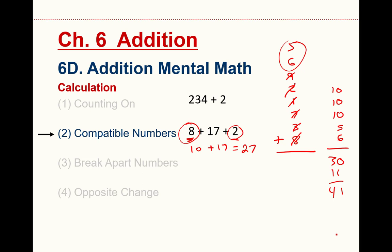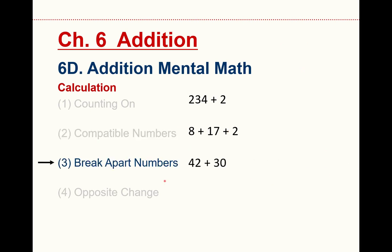Moving on. Break apart numbers. So this 42, I might realize that that's really the same thing as 40 plus 2. That's the break apart part, and then 30. Now it's easier to add the 40 and the 30. 40 and 30 is 70, so 70 plus 2 is 72. By breaking apart one of these things, I've made my calculation a little simpler.